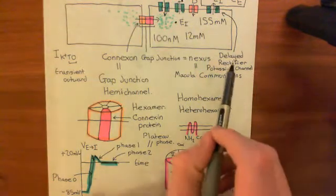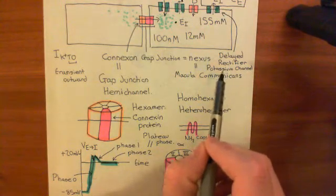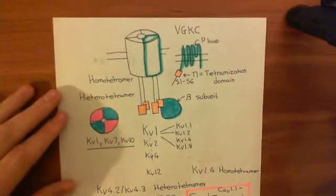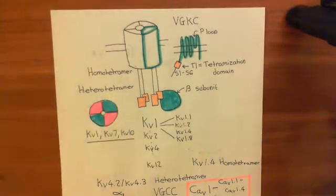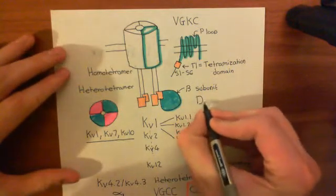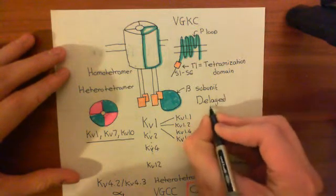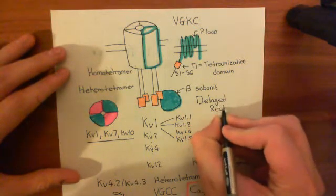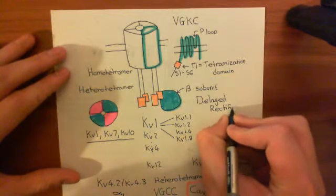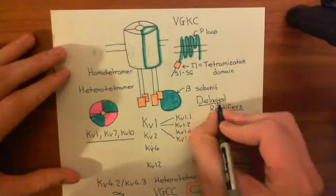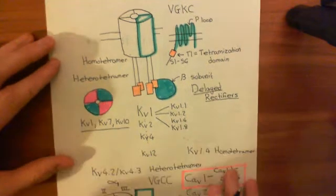I want to now discuss these delayed rectifier potassium channels — what are they, what types are they? We've discussed voltage-gated potassium channels already, so this shouldn't take too long. There are three delayed rectifiers I'm going to talk about — there are probably far more if you actually go and research it, but I'm going to talk about the main three that I know.